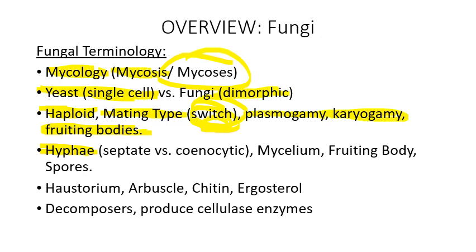Fungi form little filamentous threads — the cells divide end to end, making long threads called hyphae. Depending on which type of fungus, the hyphae may be either septate or coenocytic. A septate hyphae means the filaments are made of individual cells divided from one another by a wall. In a coenocytic hyphae, the cytoplasms are all shared and the nuclei are floating in a common cytoplasm.